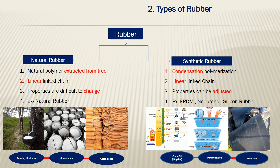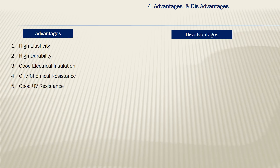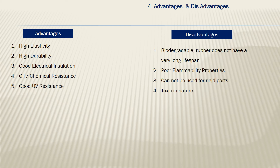Next, the advantages and disadvantages of rubber. The advantages are high elasticity, high durability, good electrical insulation, good oil and chemical resistance, and good UV resistance. Note that natural rubbers have less UV resistance, but synthetic rubbers have good UV resistance. Coming to the disadvantages: rubber is biodegradable and has a shelf life — beyond that shelf life, its properties get degraded. Another disadvantage is high flammability, and it cannot be used in rigid parts.